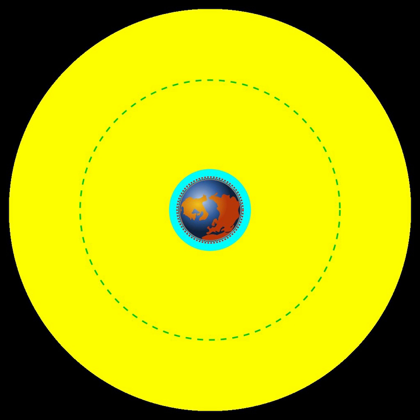Heliocentric orbit, an orbit around the Sun. In the solar system, all planets, comets, and asteroids are in such orbits, as are many artificial satellites and pieces of space debris.